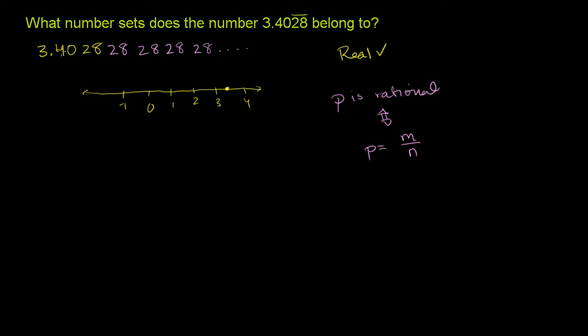So let's define x as being equal to this number. So x is equal to 3.4028 repeating. Now let's think about what 10,000x is. And the whole reason why I want 10,000x is because I want to move the decimal point all the way to the right over here. Every time you multiply by a power of 10, you shift the decimal 1 to the right. 10,000 is 10 to the fourth power.